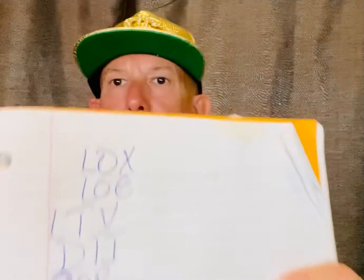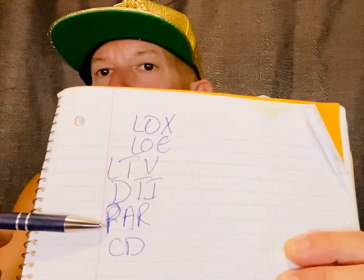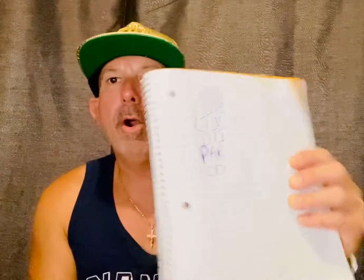Happy Friday, y'all. Hope everybody's doing well. I wanted to go over some mortgage acronyms for you. These are going to be awesome and super exciting. I made a list here: LOX, LOE, LTV, DTI, PAR, and CD. These are the acronyms that are used most in mortgage lending and your mortgage loan.